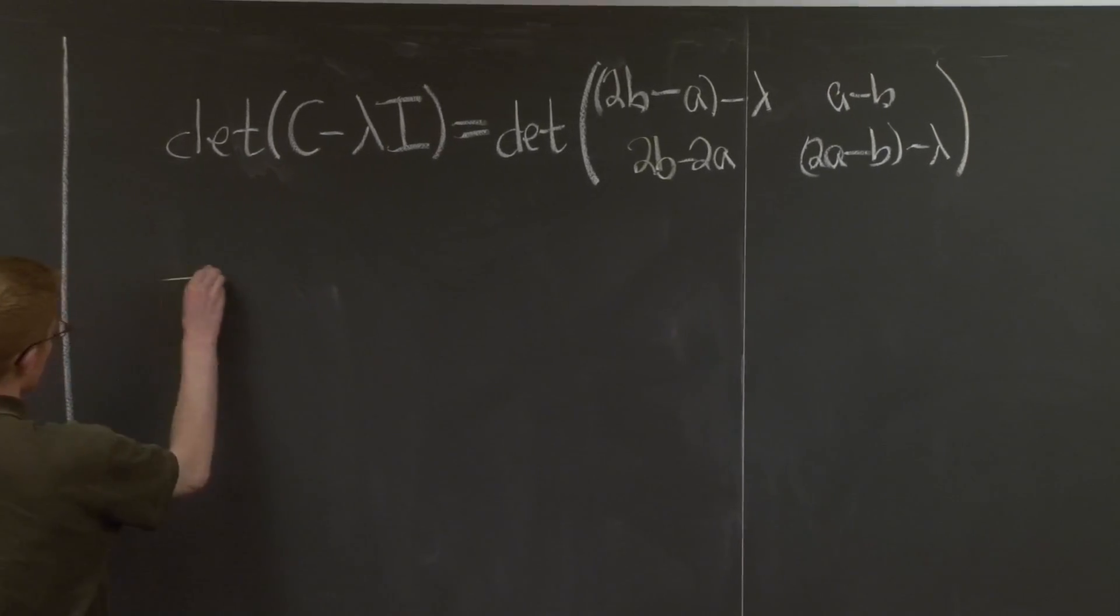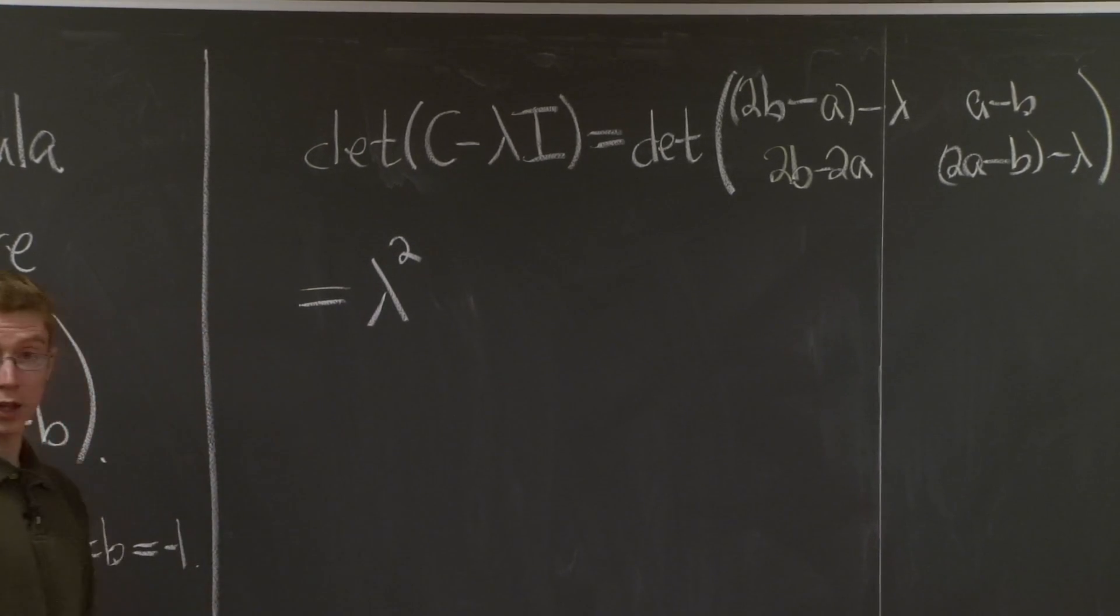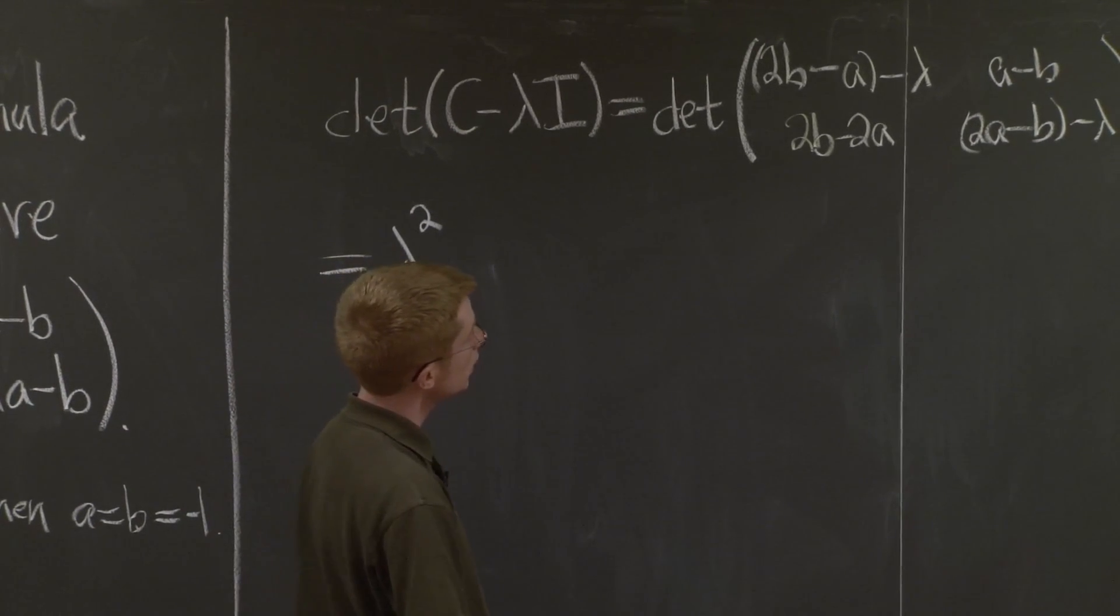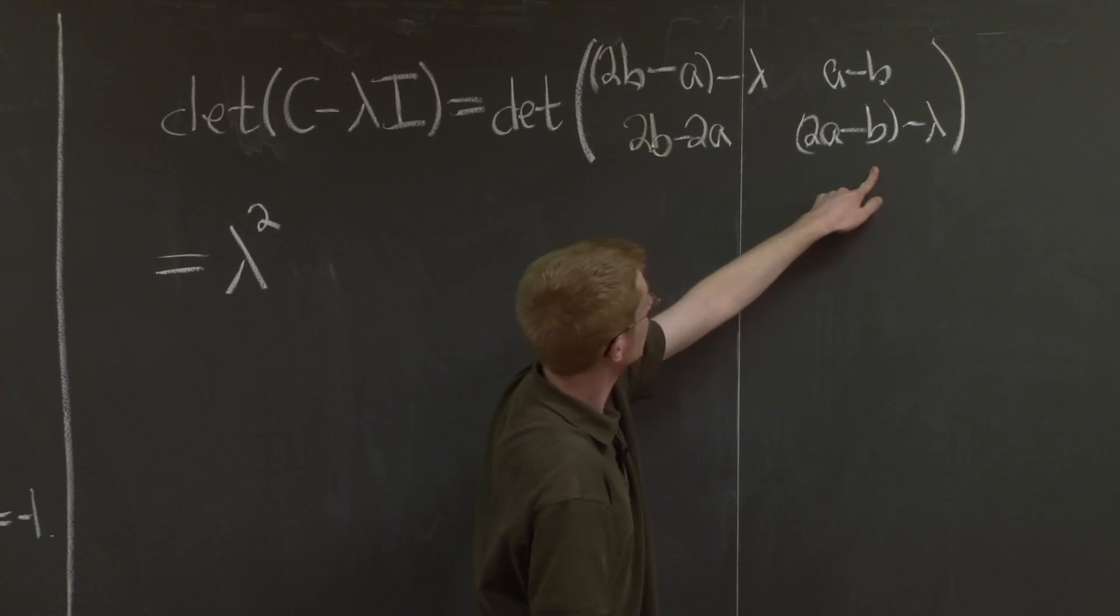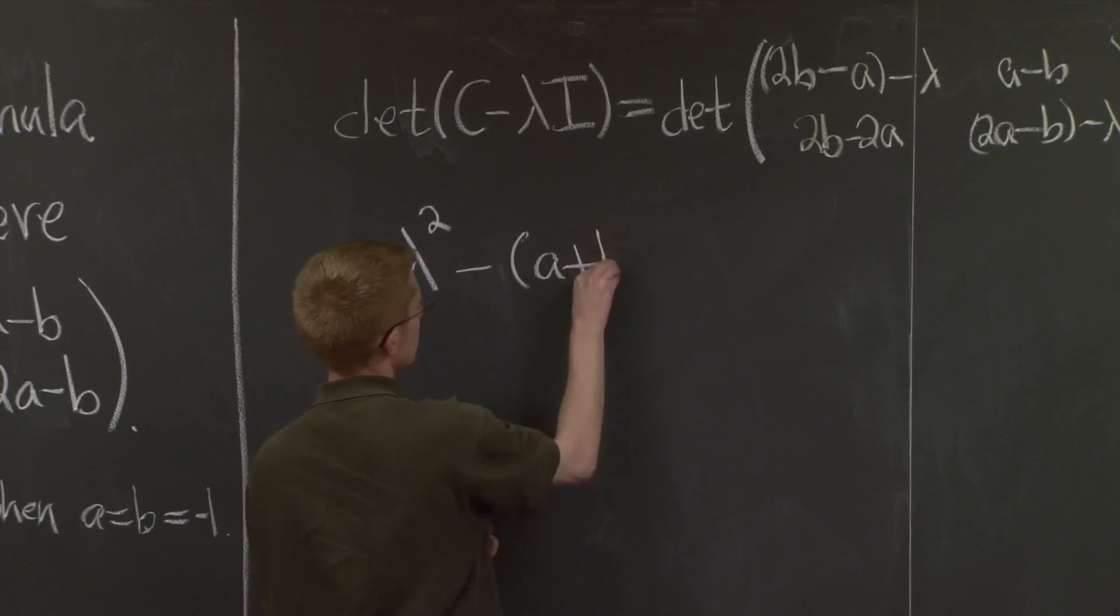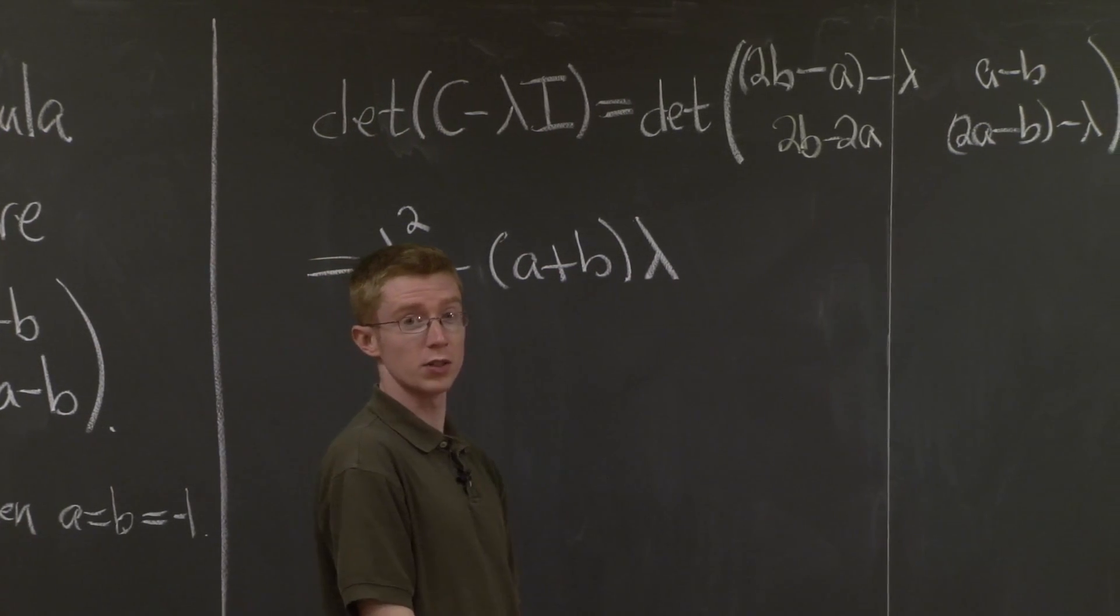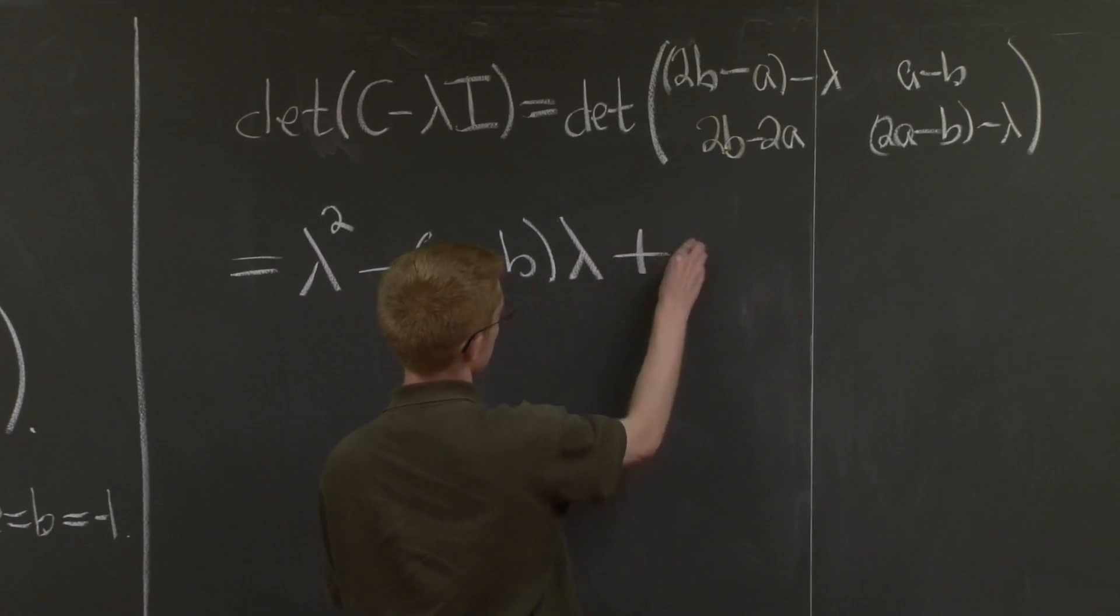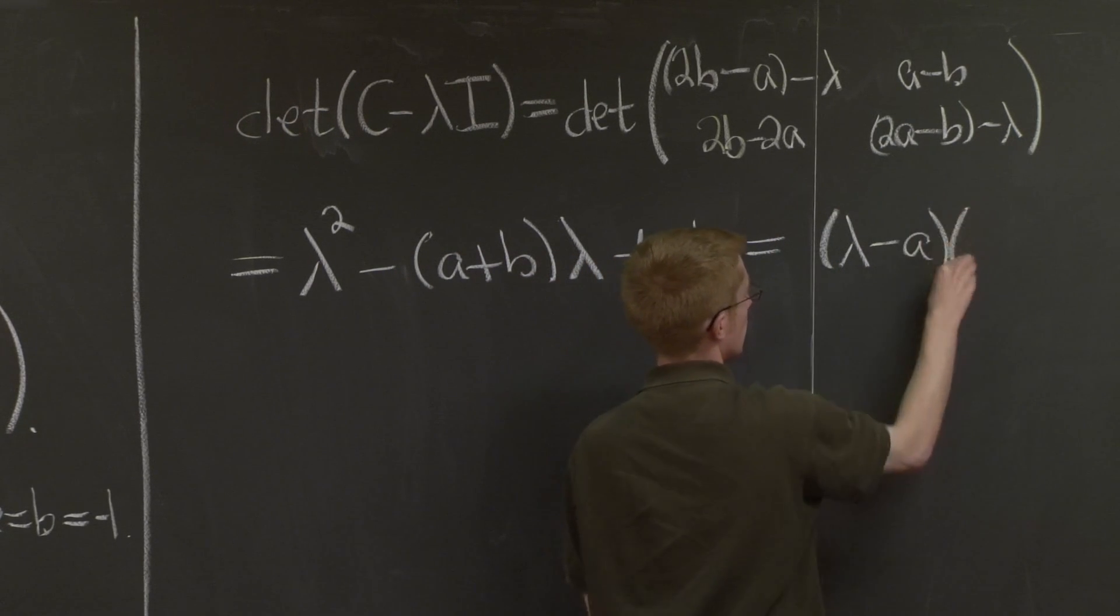OK, if you compute this, well, we have a lambda squared term. OK, our lambda term, if you look at it, you'll see we get 2B minus A plus 2A minus B, which is just A plus B, and we have a negative sign. That's negative (A plus B) times lambda, and our last term is a little tougher to compute, so I'll let you do it yourself, but you're just going to get plus AB. And this will factor as (lambda minus A) times (lambda minus B).